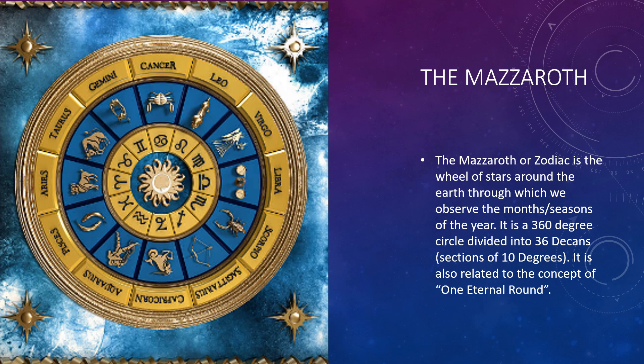It is also related to the concept of one eternal round. In Israel, understanding the scriptures is uniquely tied to the symbolism of what we call the mazerot, or the signs in the stars above. As the scriptures say, the heavens declare the glory of God. Without understanding the mazerot, we are left to a very two-dimensional understanding of the scriptures. Because as a sealed text, which the Book of Mormon is, it's encoded — written in a multi-dimensional fashion — it contains many stories and many teachings all at the same time. The teachings of the stars and how they relate to the gospel is just one of those dimensions.